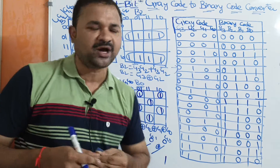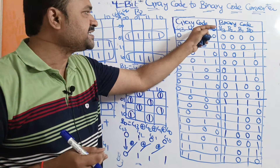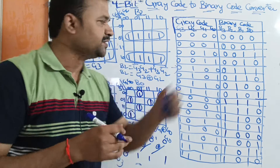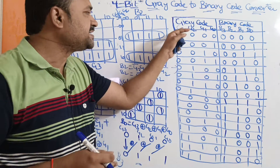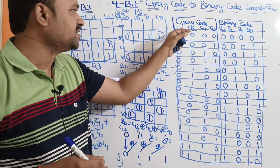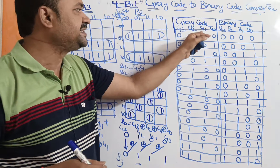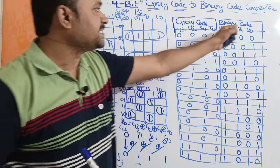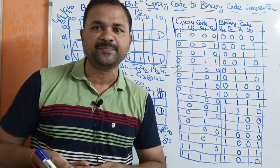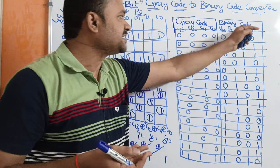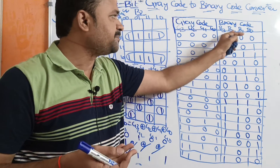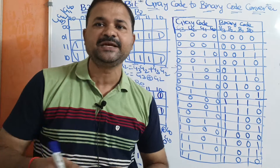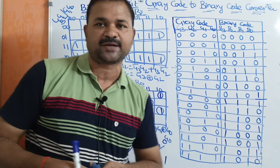The truth table has two columns. The first column represents grey code, that is the input number, represented with the help of 4 bits: g3, g2, g1, g0. The second column represents the output number, that is the binary code, which is represented using 4 bits: b3, b2, b1, b0.